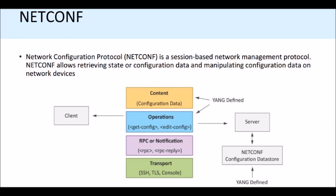The diagram below shows the architecture of NETCONF. It actually consists of four layers: the transport layer, RPC notifications, the operation layer, and the content layer. The operation layer is connected to the client and also connected to the server. The server is connected to the NetConfiguration database which is encoded with YANG defined language.